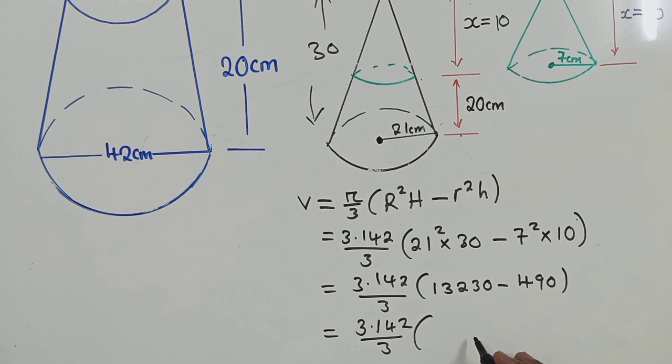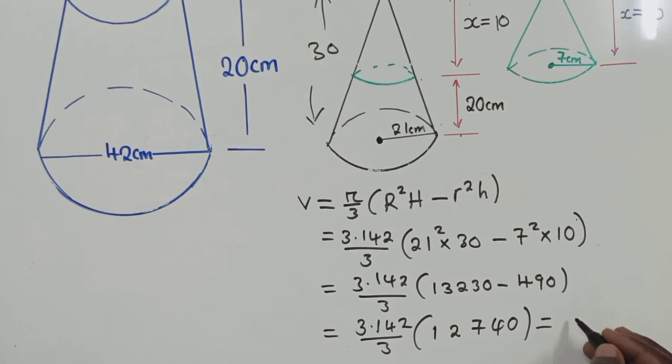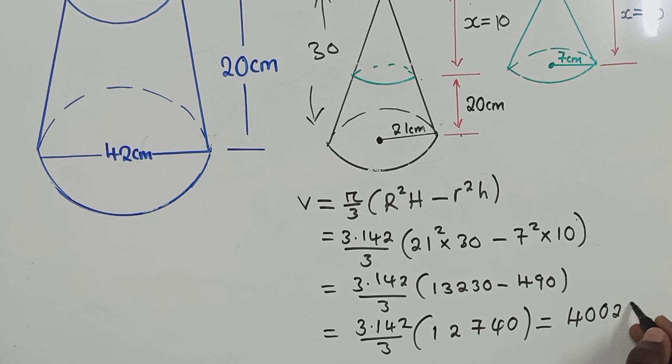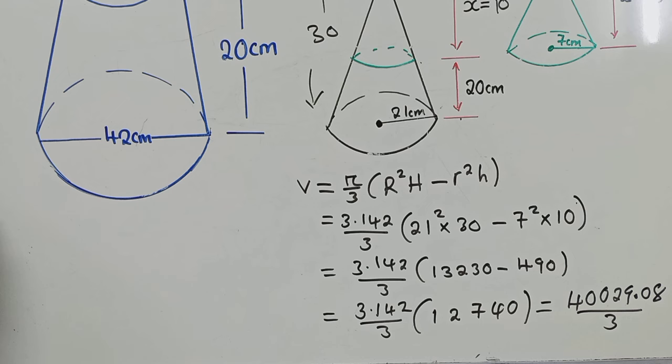So the next thing will be to just multiply 3.142 over 3. Inside the brackets when we subtract here, we're getting 12,740.